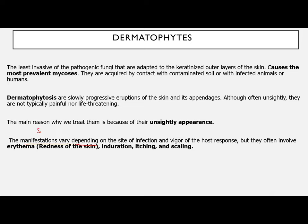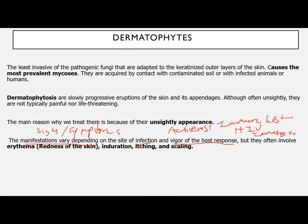The signs and symptoms would vary depending on the site of infection and the vigor — meaning the activeness — of the immune system of the host. For example, if you are HIV positive, you are immunocompromised, and expect that the signs and symptoms would be worse. The most common sign is erythema or redness of the skin, followed by induration, itching, and even scaling.